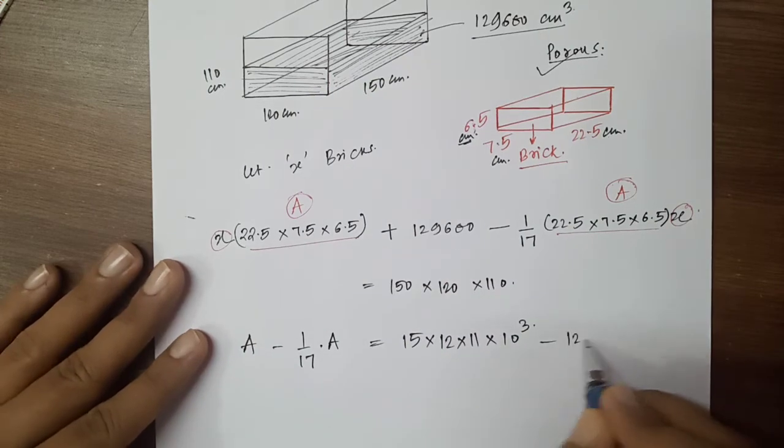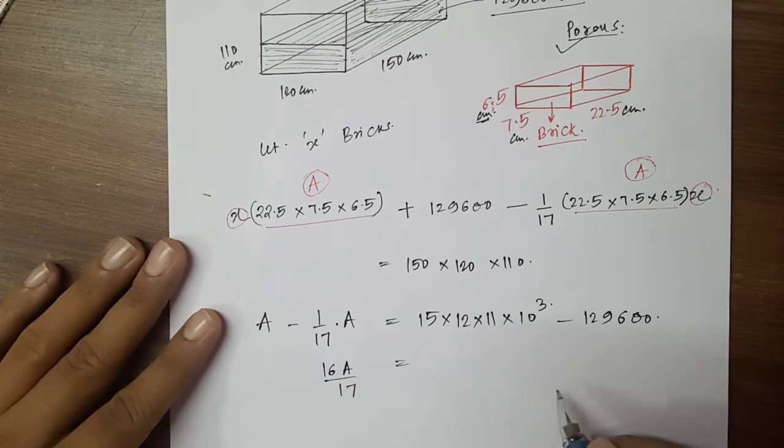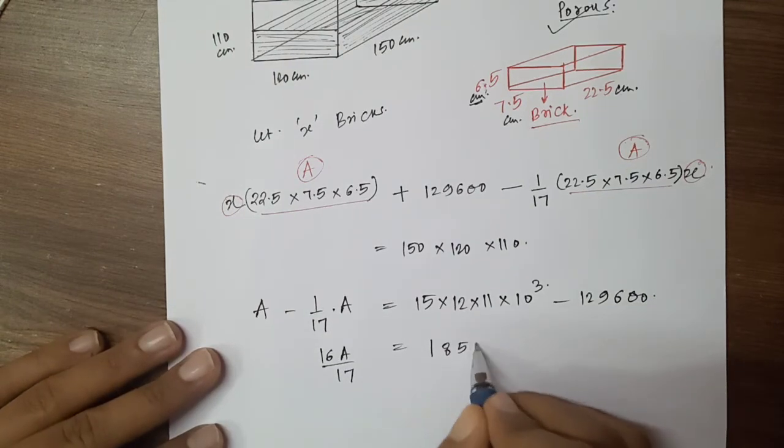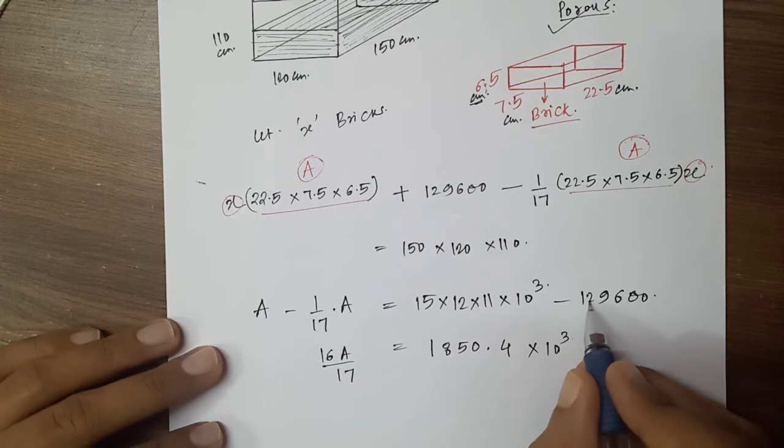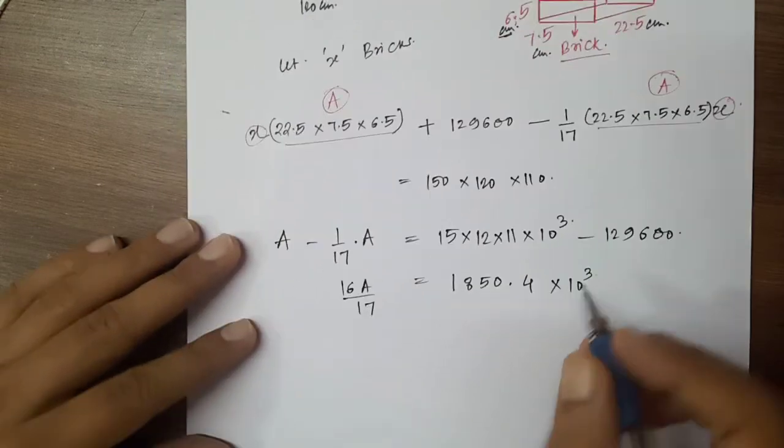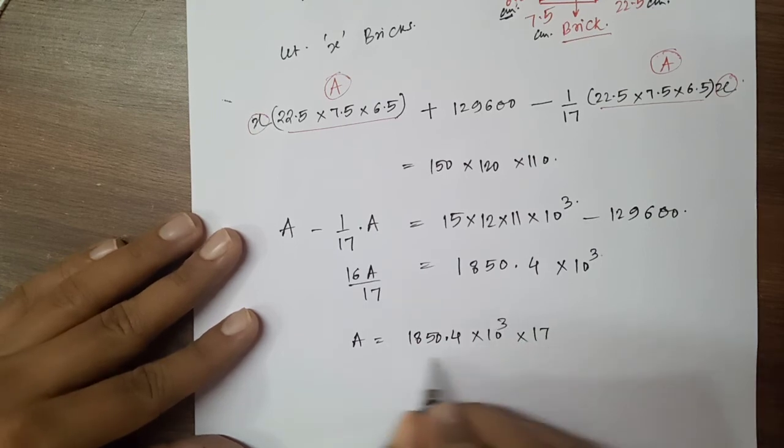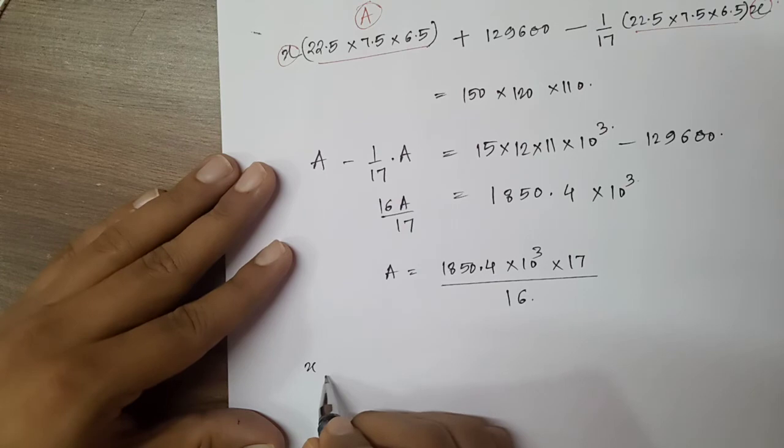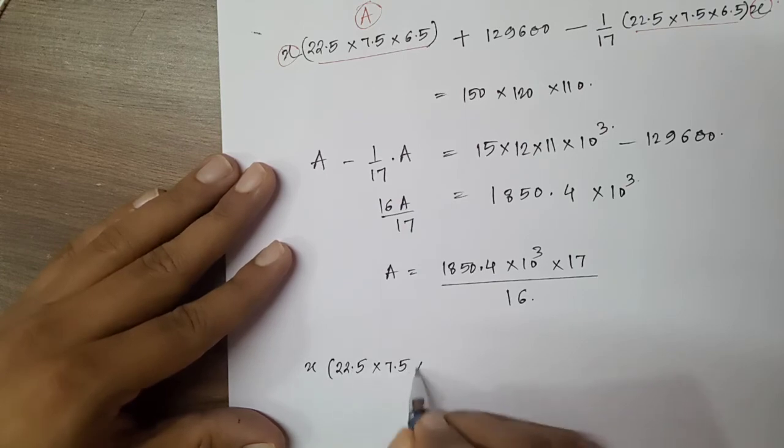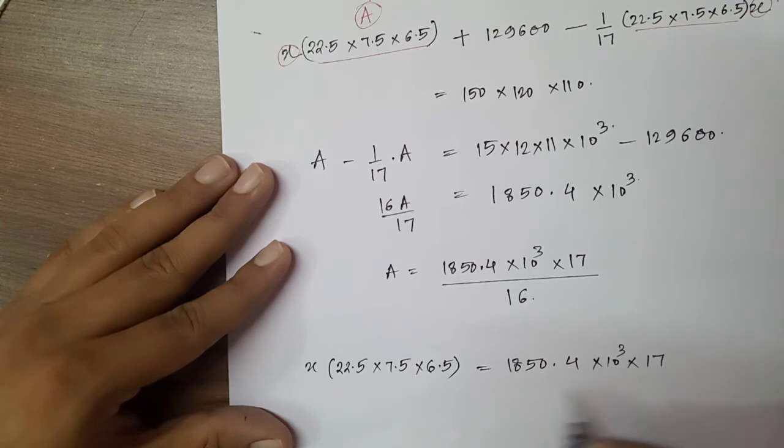Which is equal to, left hand side, 16/17 A. Which is 198.4 into 10 raised to 3 into 17/16. And now, A is 22.5 into 7.5 into 6.5, which equals 1850.4 into 10 raised to 3 into 17/16.